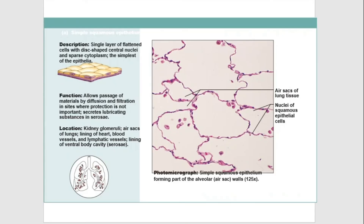Simple squamous epithelium is composed of flattened, irregularly shaped cells. It is found in the alveoli of lungs, parietal layer of Bowman's capsule, descending limb of Henle's loop, blood and lymph vessels, and serous cavities. The simple squamous epithelium of blood and lymph vessels has the special name endothelium, and that lining serous cavities is named mesothelium.